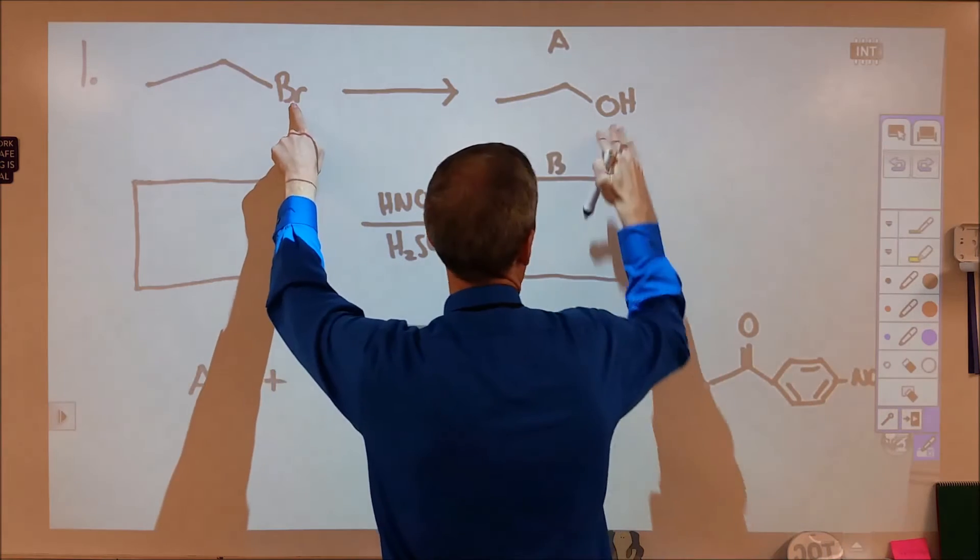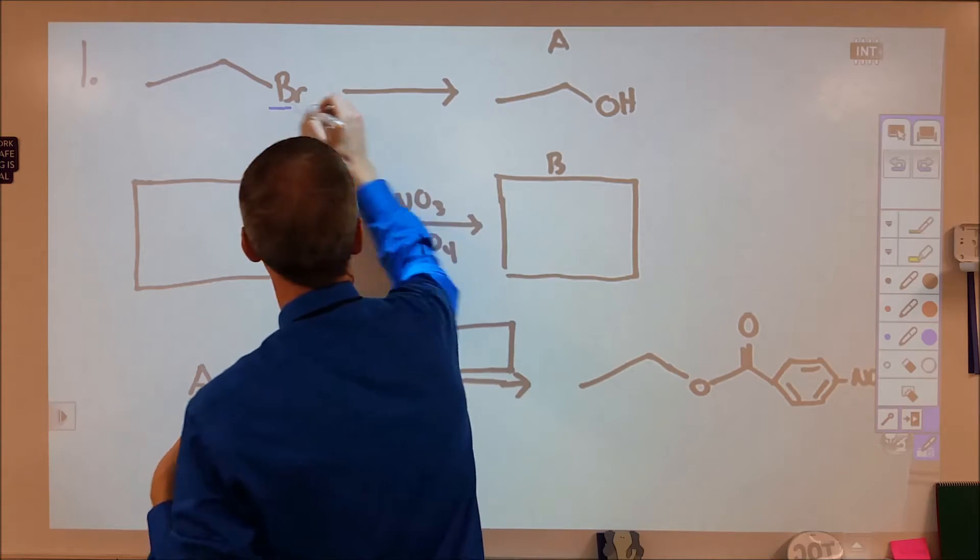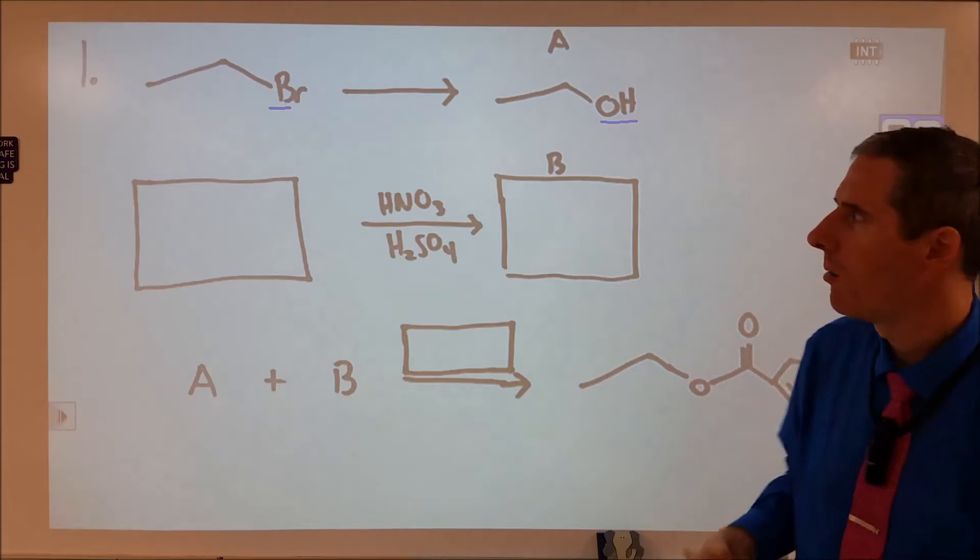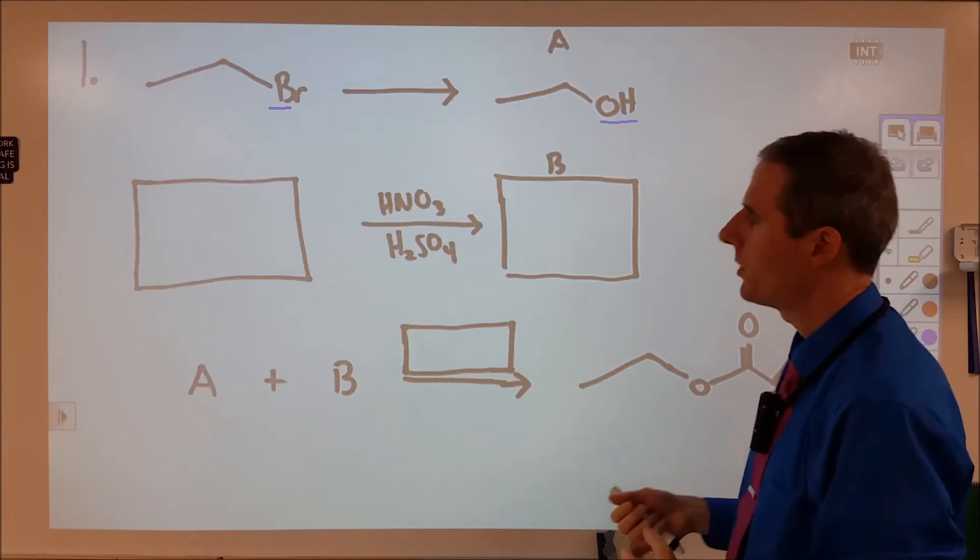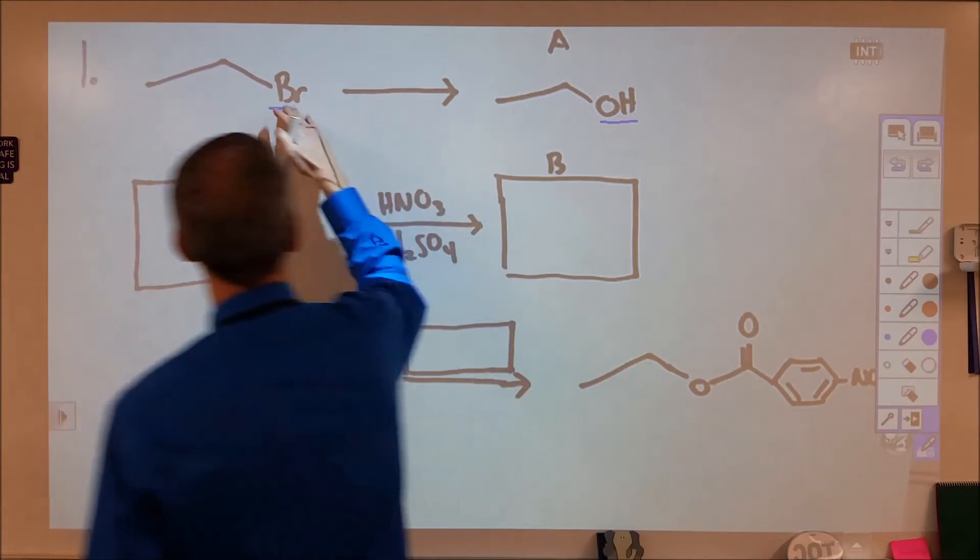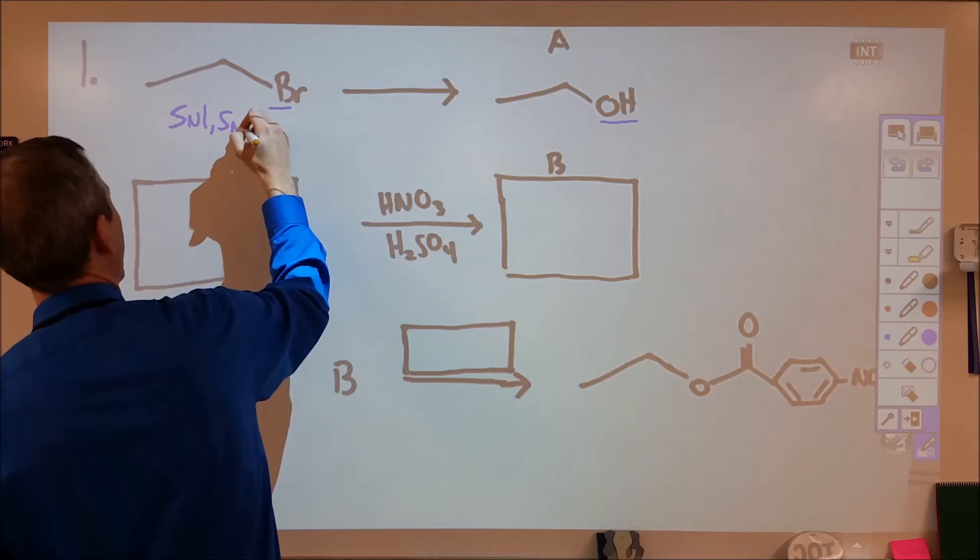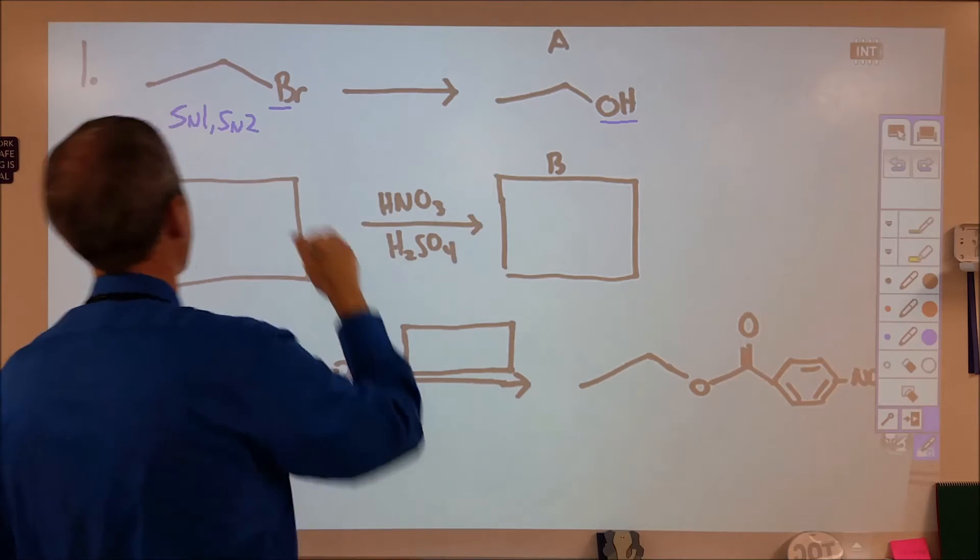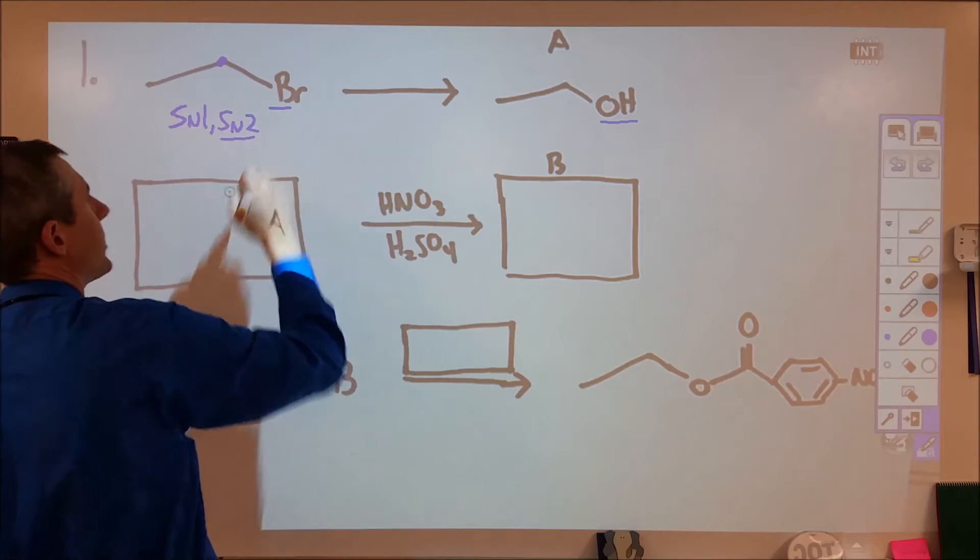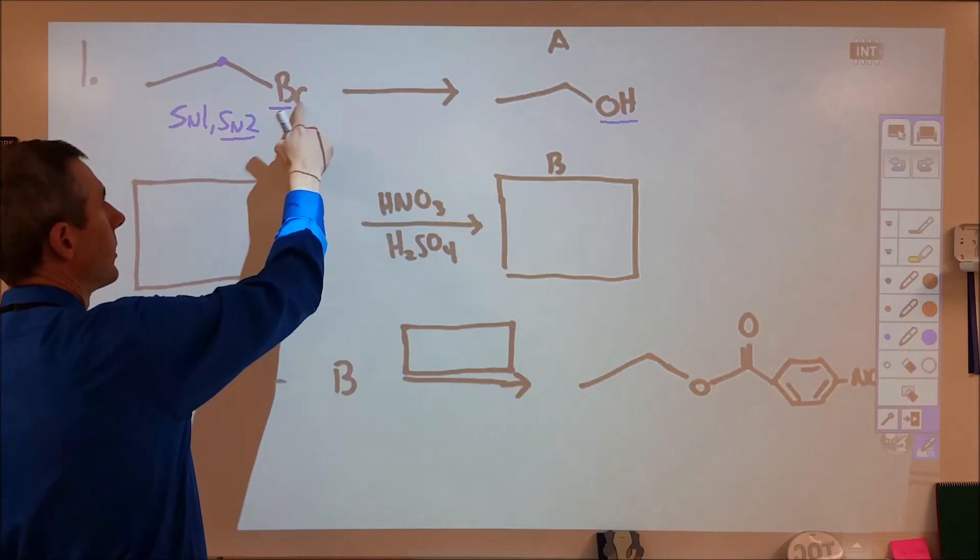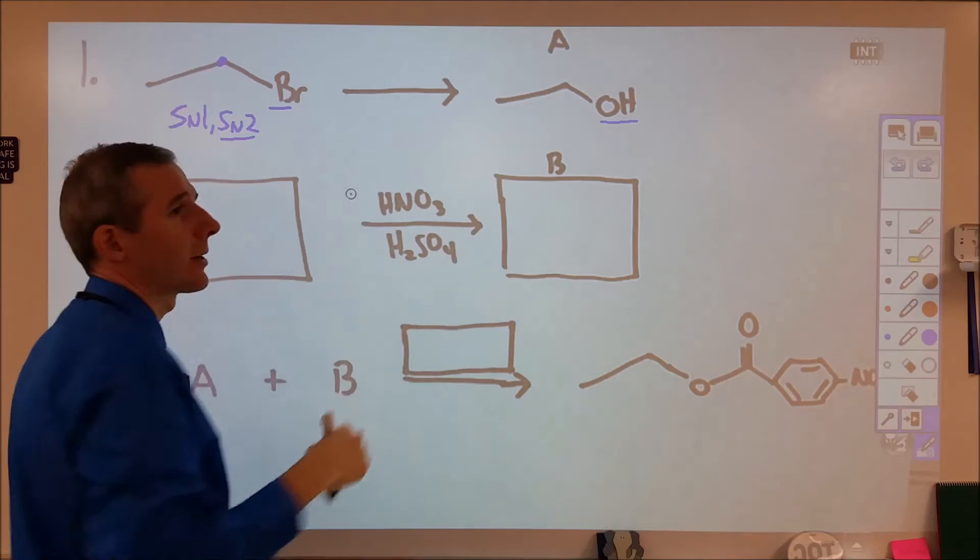So the big difference here is we're switching out a bromine for a hydroxyl group. We want to look at what kind of reaction is possible, what reagents do we need. For this, we're looking at substitution, either an SN1 or an SN2 reaction. In this case, we have a primary carbon, so it's going to be SN2 and we're trying to figure out what to add to get rid of the bromine group and add in the hydroxide.